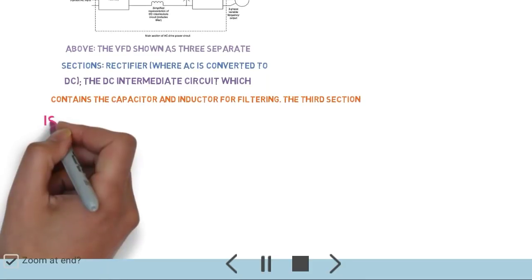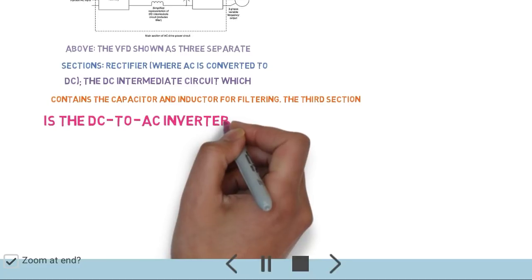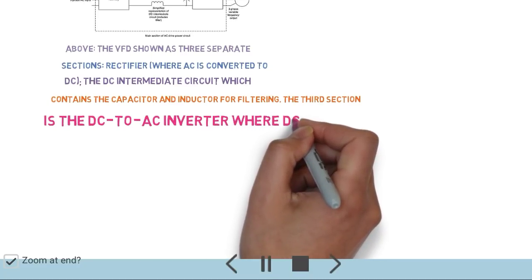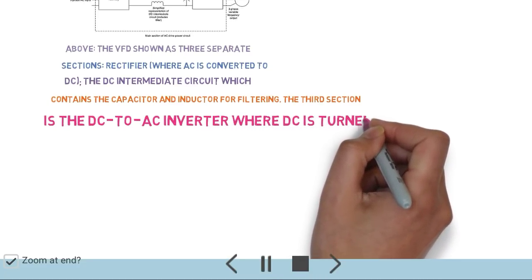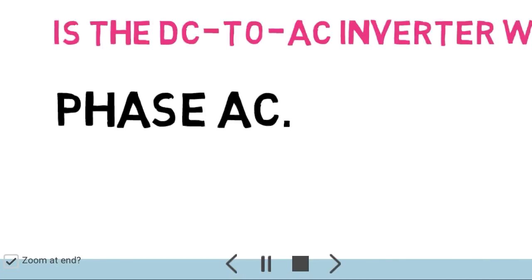The third section is the DC to AC converter inverter, where DC is turned back to AC three-phase supply.